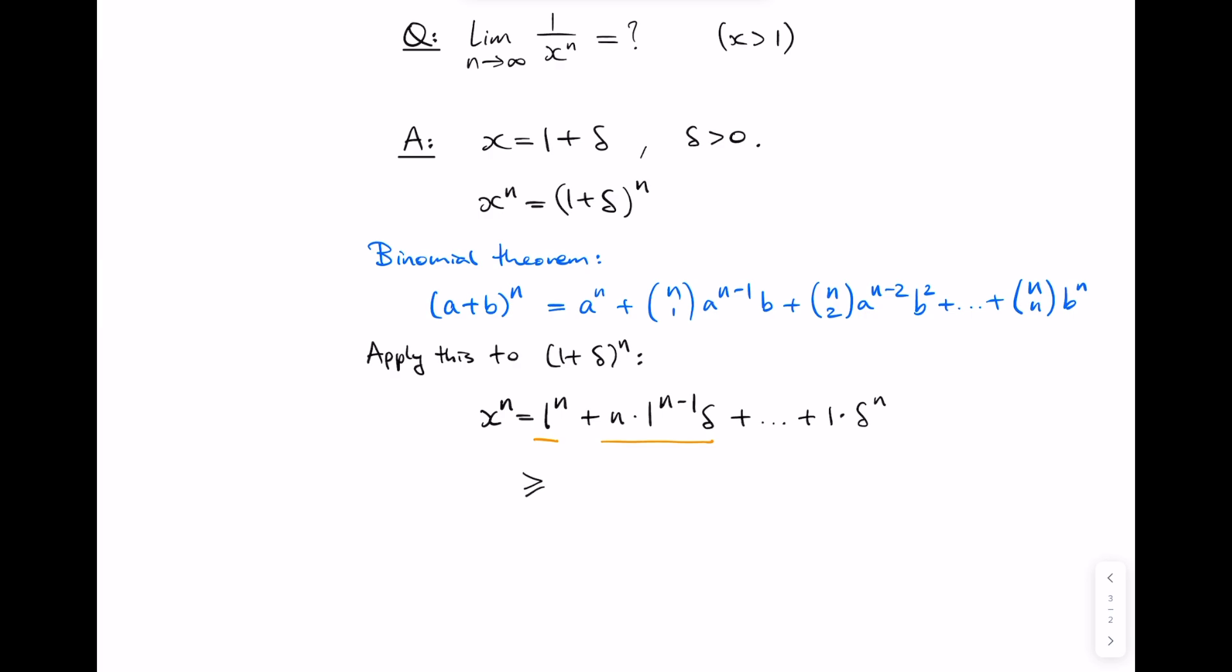So they tell us that x to the n is greater than or equal to 1 plus n times delta, the rest of the terms being positive. Therefore, 1 over x to the n is less than or equal to 1 over 1 plus n delta.